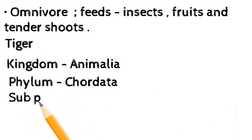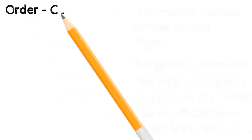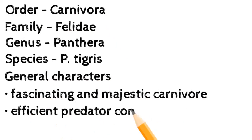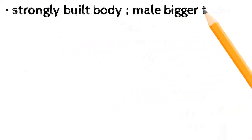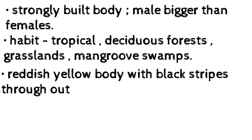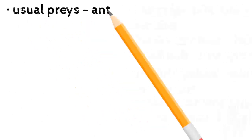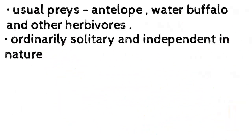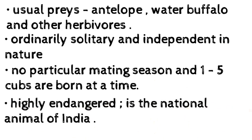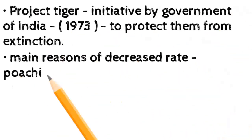Tiger — Kingdom: Animalia; Phylum: Chordata; Sub-phylum: Vertebrata; Class: Mammalia; Sub-class: Theria; Order: Carnivora; Family: Felidae; Genus: Panthera; Species: P. tigris. A fascinating and majestic carnivore and efficient predator confined to forests of Asia. Strongly built; males bigger than females. Inhabits tropical deciduous forests, grasslands, and mangrove swamps. Reddish-yellow body with black stripes. Poor vision and smell but high auditory sense. Usual prey: antelope, water buffalo, and other herbivores. Ordinarily solitary and independent. No particular mating season; one to five cubs born at a time. Highly endangered; national animal of India. Project Tiger launched in 1973 to protect them; main threats are poaching and habitat loss.